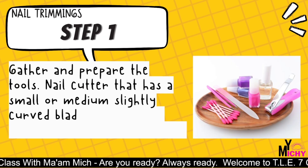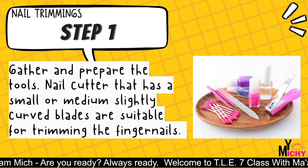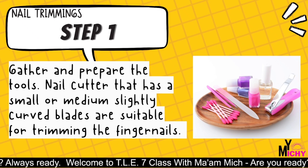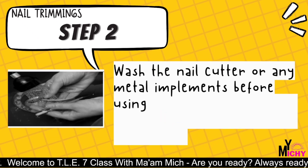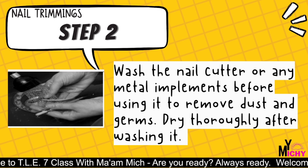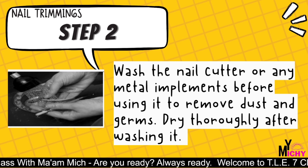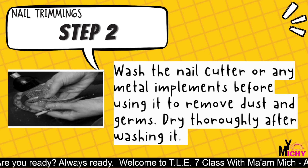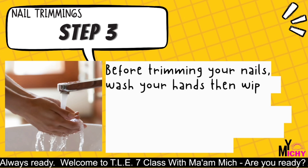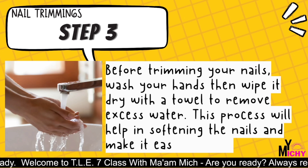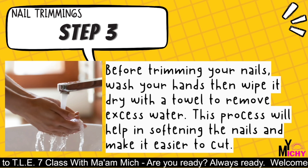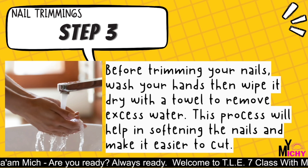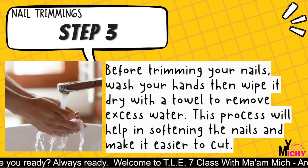Here are the steps. Step 1: gather all the materials needed for nail trimming. Step 2: wash the nail cutter or any metal implements before using to remove dust and germs; dry thoroughly after washing. Step 3: before trimming your nails, wash your hands then wipe with a dry towel. This process will help soften the nails and make them easier to cut.